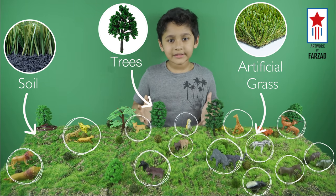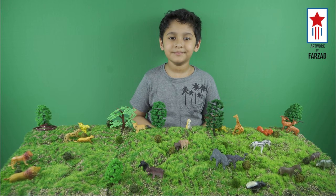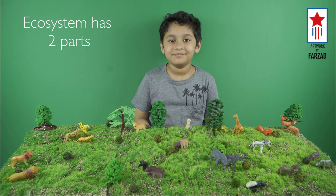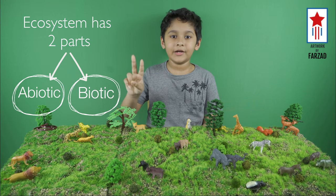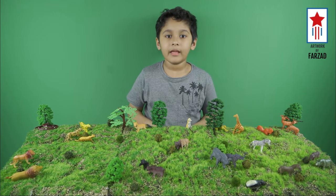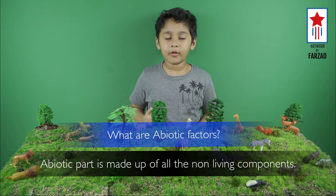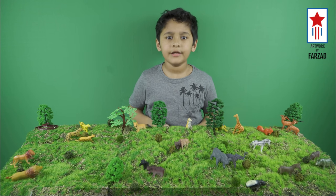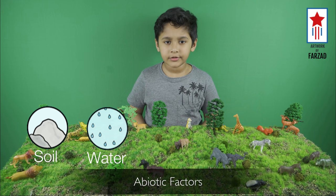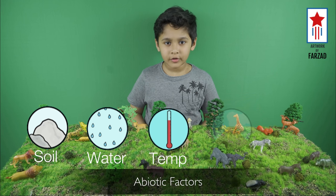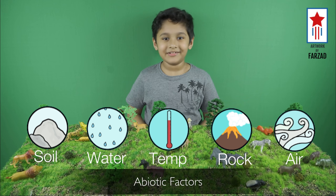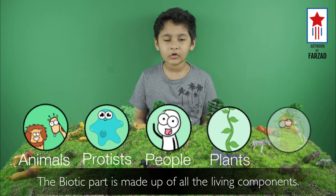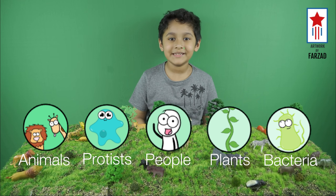How does the ecosystem work here? There are two primary parts of an ecosystem: abiotic and biotic. The abiotic part is made up of all the non-living components like soil, water, temperature, rocks, air, etc. The biotic part is made up of all the living components of the ecosystem.